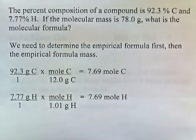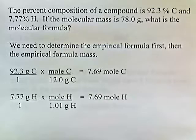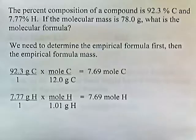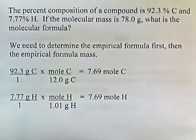Let's try another problem. The percent composition of a compound is 92.3% carbon and 7.77% hydrogen. If the molecular mass is 78, what's the molecular formula? The difference here is that we need to determine the empirical formula first, then the empirical formula mass. In the previous problem the empirical formula was given, but here we find it from the percent composition.